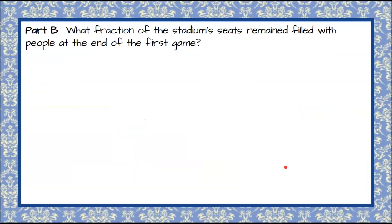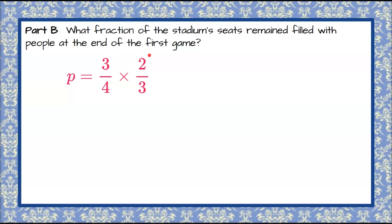Let's move on to Part B. In Part B, we're asked what fraction of the stadium seats remained filled with people at the end of the first game. So here, they want us to solve the equation that we wrote in Part A. I'm going to have you pause the video here, solve your equation from Part A, and come back to see my work. Welcome back. Here's our equation from Part A: P equals three-fourths multiplied by two-thirds.